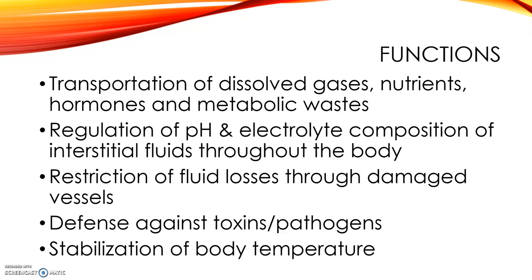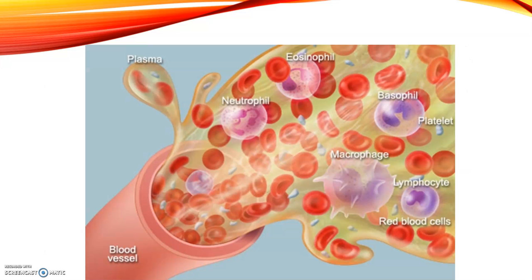Blood is going to absorb heat that's generated by the skeletal muscles. You can see here a diagram of blood. Blood is made up of a liquid portion called plasma and then what we call formed elements, which are our blood cells — red and white — and platelets. Blood is much heavier than water and three to four times more viscous than water.